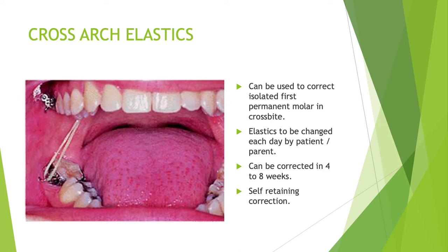In a typical dental posterior crossbite, the posterior teeth are any teeth behind the canines. If a single tooth is involved — most commonly the first permanent molar or the premolar — there is something called cross arch elastics, which are highly useful. They can be used to correct an isolated first permanent molar in crossbite, meaning only that one molar is involved in the crossbite situation.